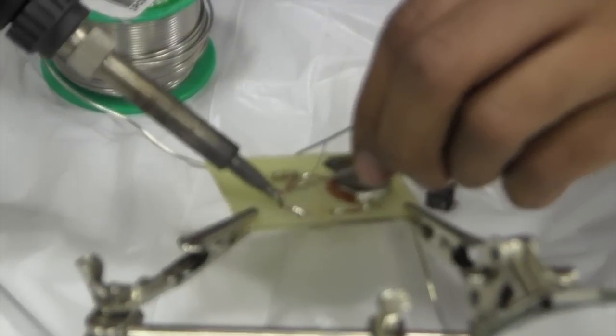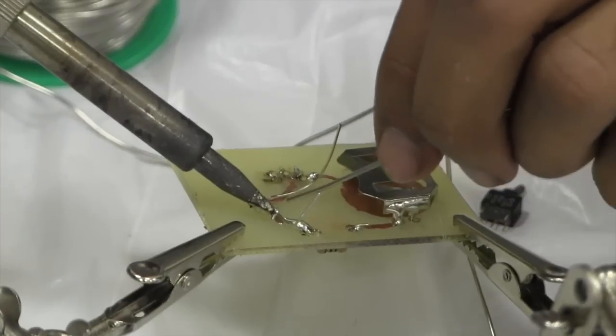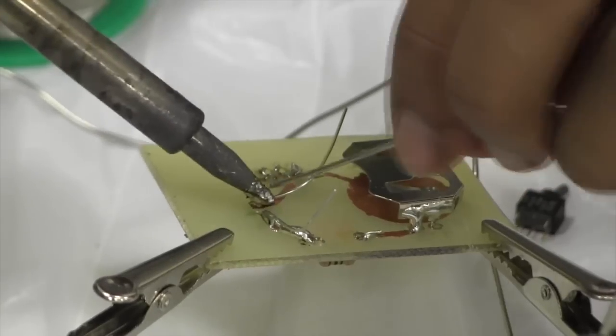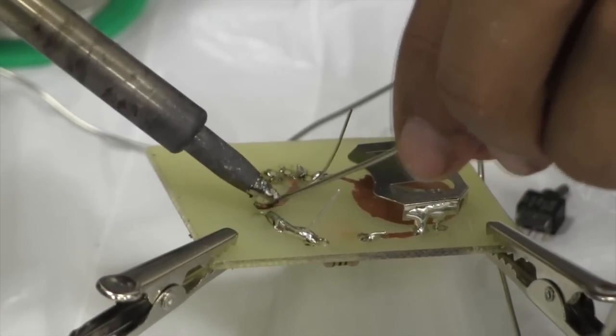Notice that we solder everything with wires on the same side as the copper, except for the battery holder, because the copper on the board actually connects to one side of the battery.